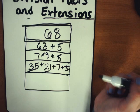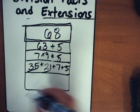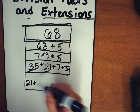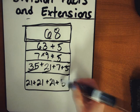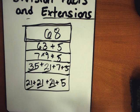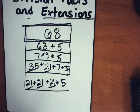I could do this as 35 plus 21 plus 7 plus 5, 35 and 21 both being multiples of different numbers. You could also write this as 21 plus 21 plus 21 plus 5, 21 being those multiples of different numbers as well.